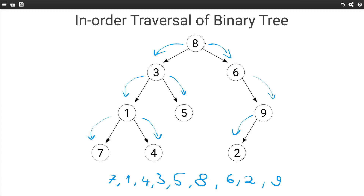So in the case of this tree, doing an in-order traversal will produce the following output: 7, 1, 4, 3, 5, 8, 6, 2, and 9.